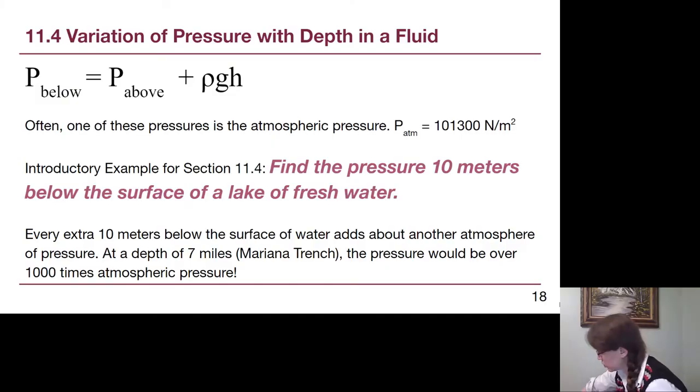It's kind of a quick rule of thumb that every 10 meters you go lower in water is going to add another atmosphere's worth of pressure. But that can really add up. At a depth of seven miles, the Mariana Trench in the middle of the ocean, the pressure would be over a thousand times that of atmospheric pressure, which is why it is so difficult to build a submersible vehicle that can withstand those pressures. These kinds of examples we will see several of in the assignments. The process we watch you can always rewatch, and there are other examples in the additional problems.